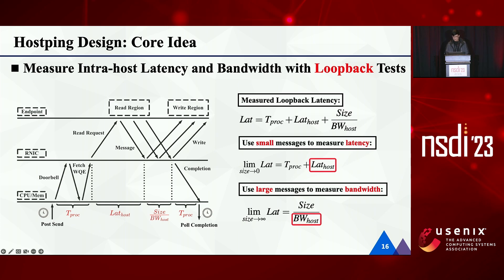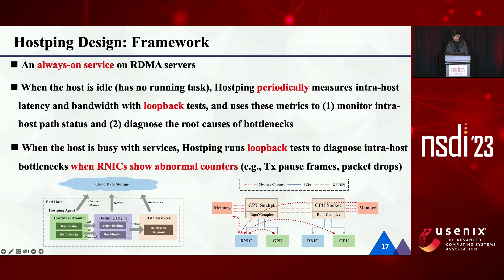In brief, HostPing uses large messages to measure intra-host bandwidth and uses small messages to measure intra-host latency. HostPing is an always-on service. When there is no task on the server, HostPing periodically measures intra-host latency and bandwidth with loopback tests and uses these metrics to monitor intra-host path status. If some paths are abnormal, HostPing will further diagnose the root cause. When the host is busy with services, HostPing runs loopback tests to diagnose intra-host bottlenecks when R-NICs show abnormal counters.